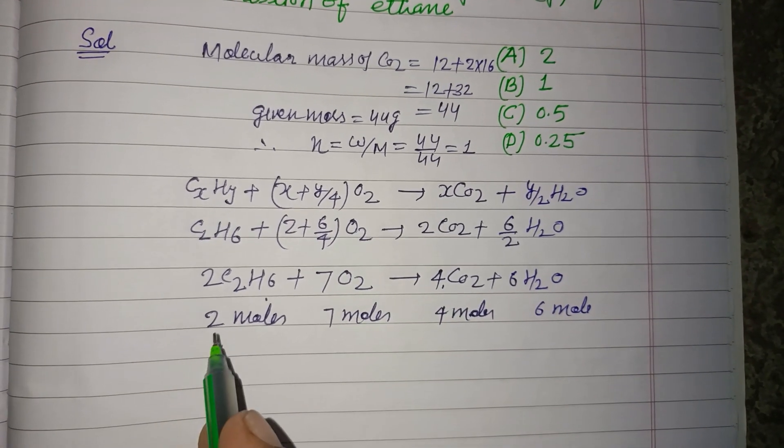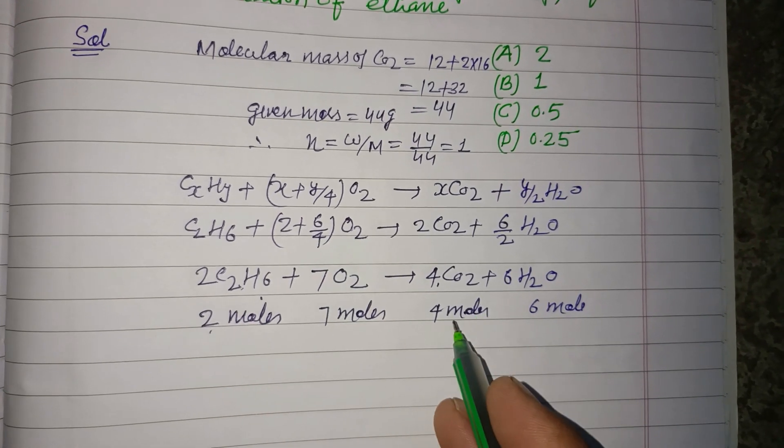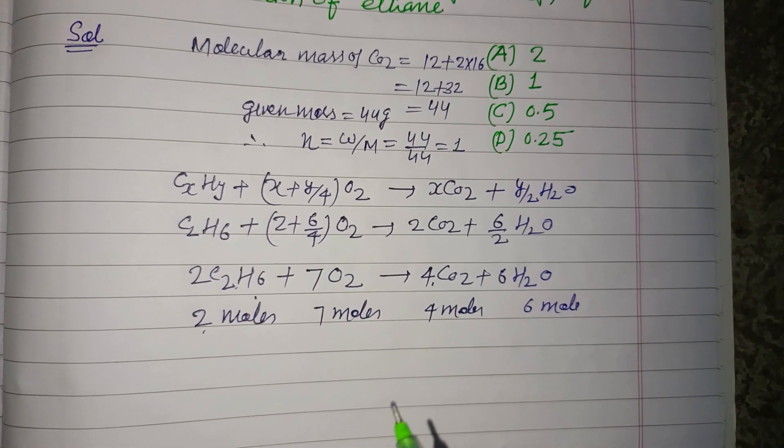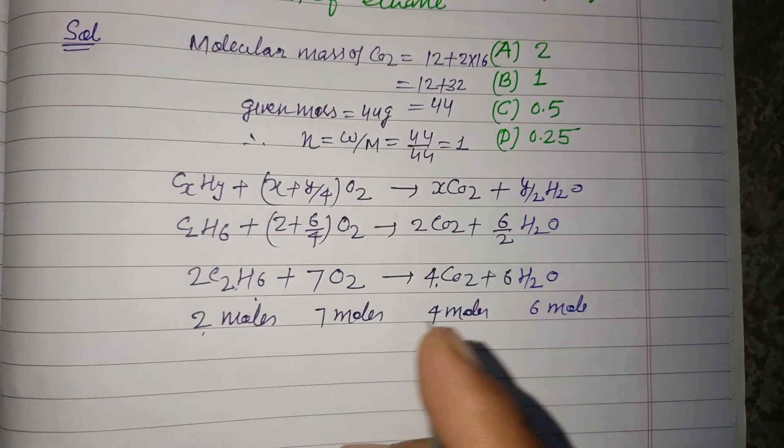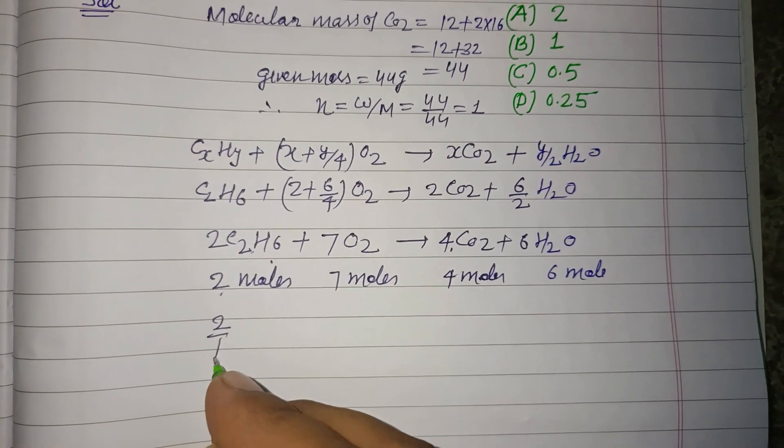But we want to find only one mole of carbon dioxide, so dividing by four in all the terms gives us 2/4 moles.